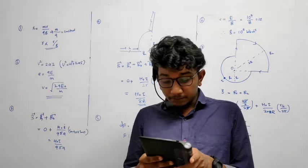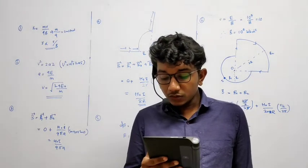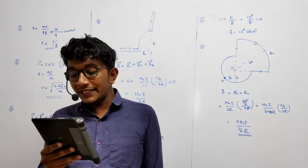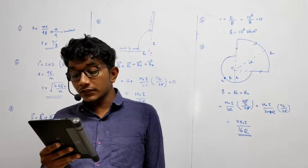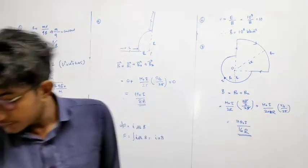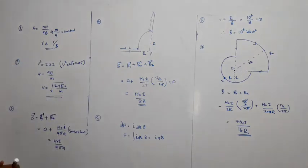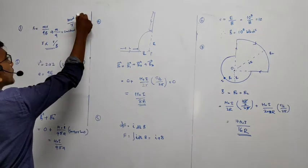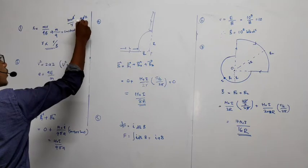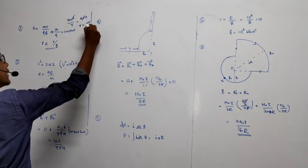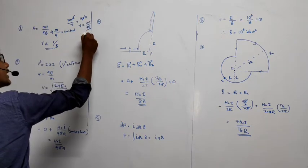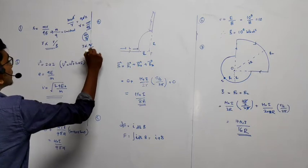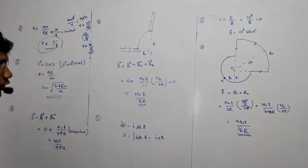First one: an electron moves in a circular orbit with uniform speed v. It produces a magnetic field B at the center of the circle. The radius of the circle is proportional to what? First thing, look at this. We know that mv squared by r, our main equation, our major equation is mv squared by r equals qvB. v and B got cancelled, so r equals mv divided by qB. So we know that m by q is a constant for a particular particle. So r is proportional to v by B. The answer is r is proportional to v upon B.